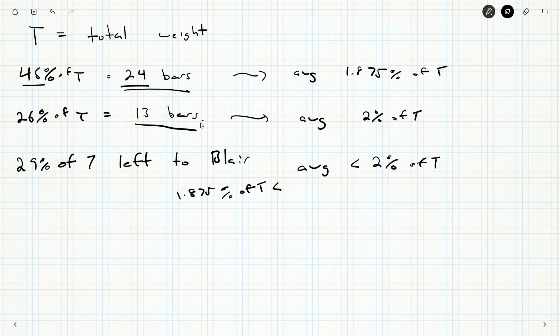Well, 45 divided by 24, 26 divided by 13, 29 divided by some number. So we might say something like B bars to Blair instead of L.